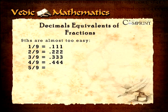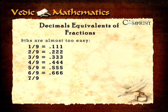Five-ninths equals 0.555, and so on. Six-ninths equaling 0.666, and so on. Seven-ninths equaling 0.777, and the eight-ninths which is 0.888, and the like.